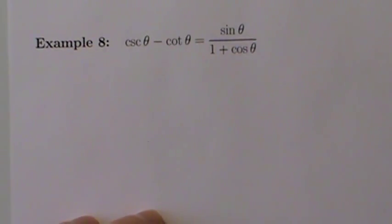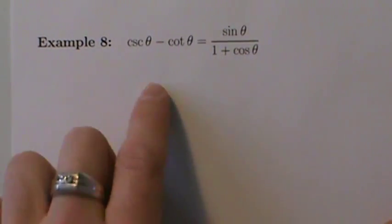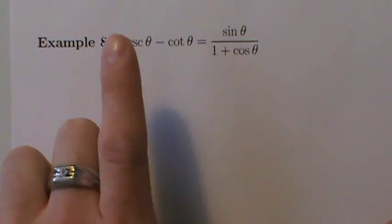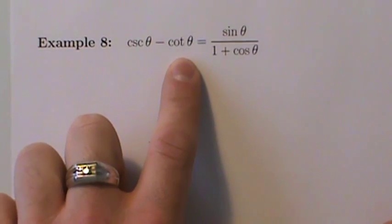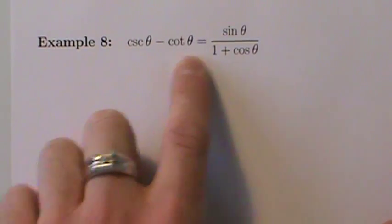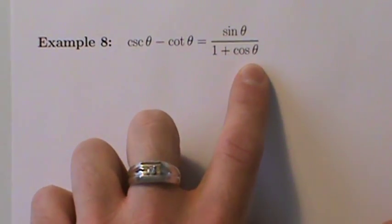Here's example 8 with trig identities. Cosecant of theta minus cotangent of theta equals sine of theta divided by 1 plus cosine of theta.